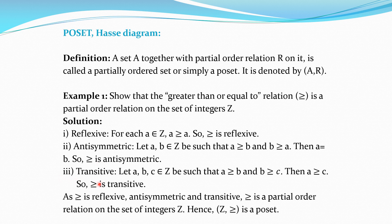For transitivity, we consider three elements A, B, C such that A ≥ B and B ≥ C. Then A ≥ C, meaning A is related to C. So the relation is transitive. As the relation is reflexive, antisymmetric and transitive, it is a partial order relation on the set of integers Z. Hence, Z together with the ≥ relation is a poset.